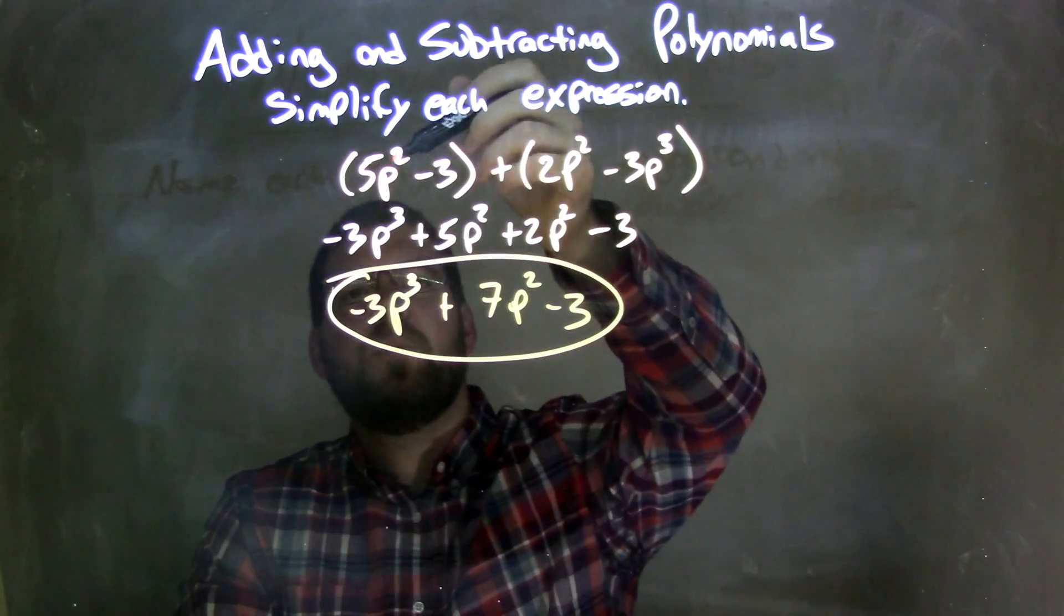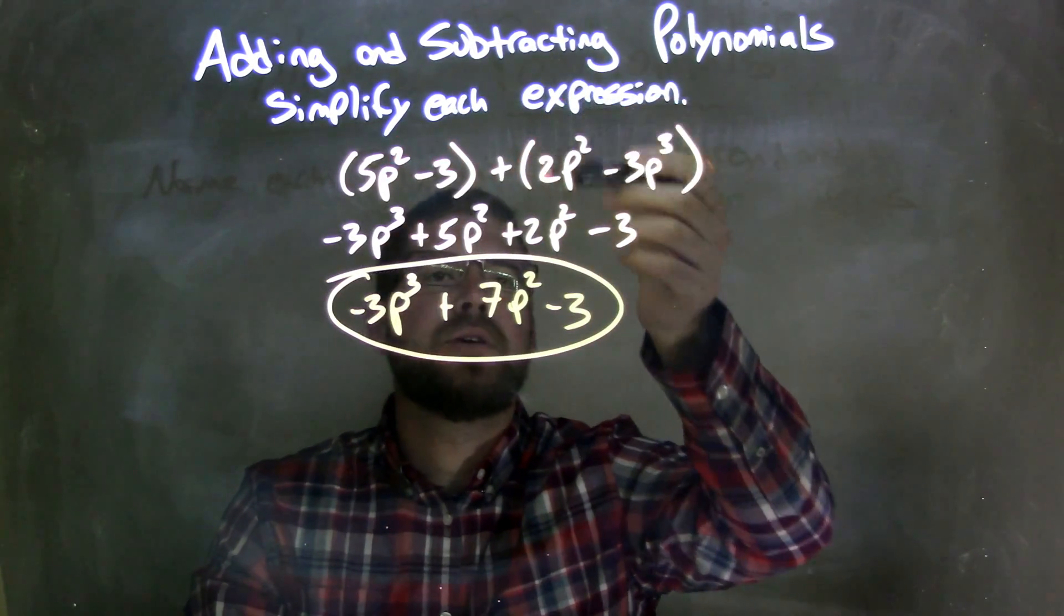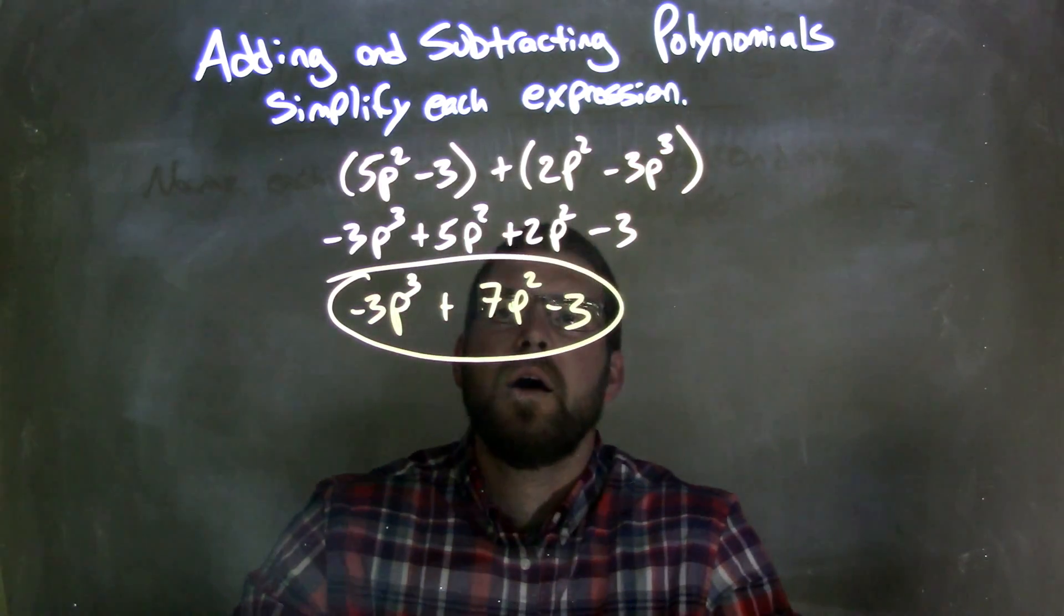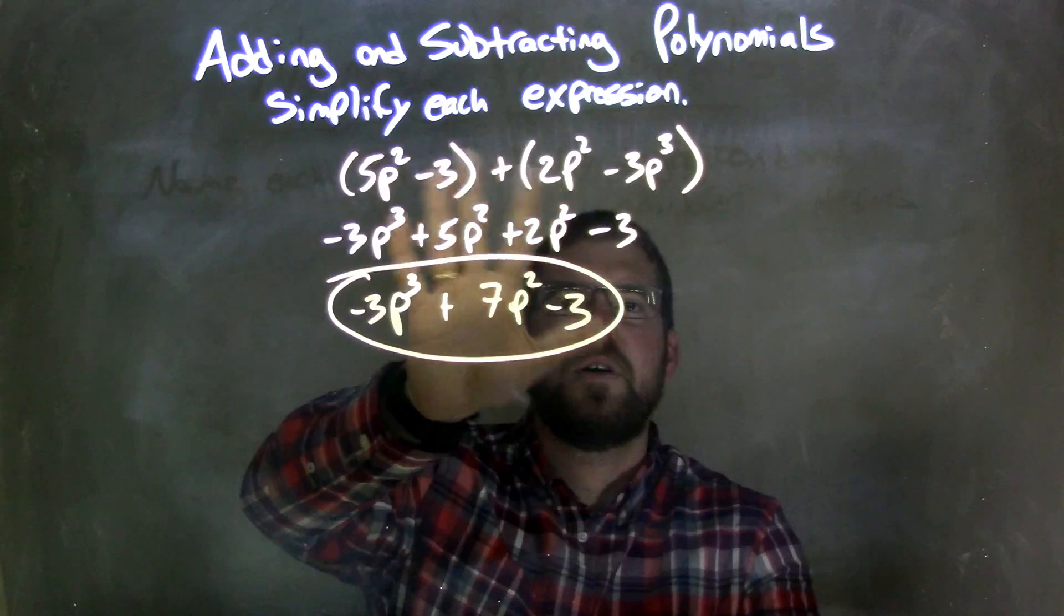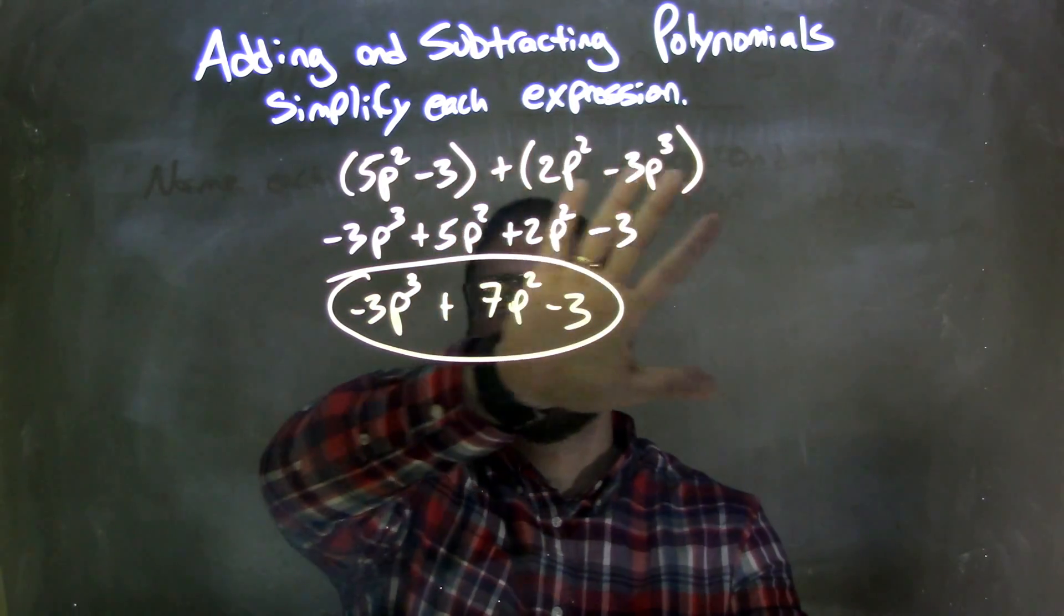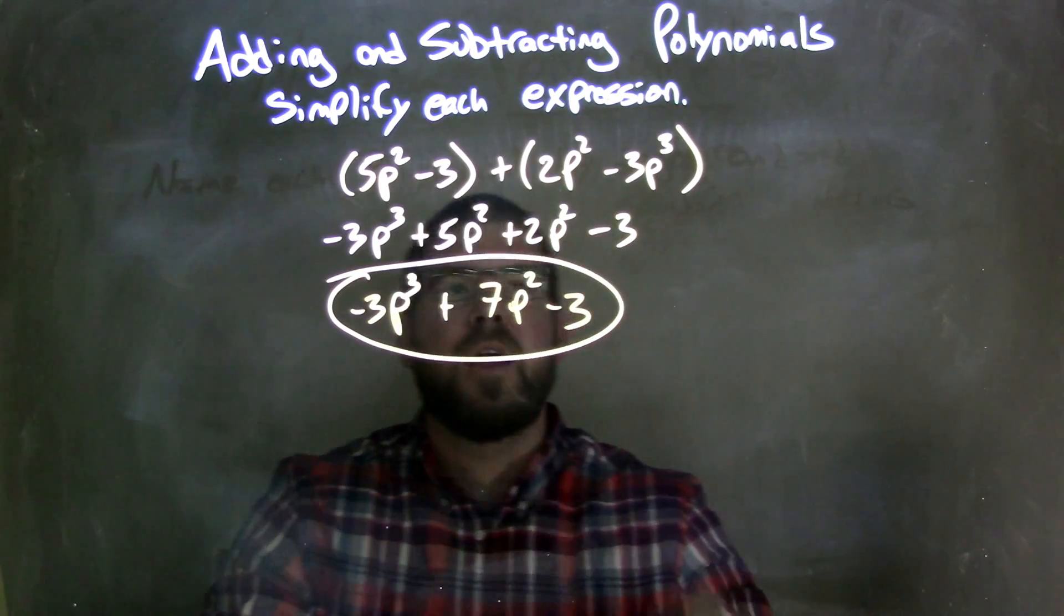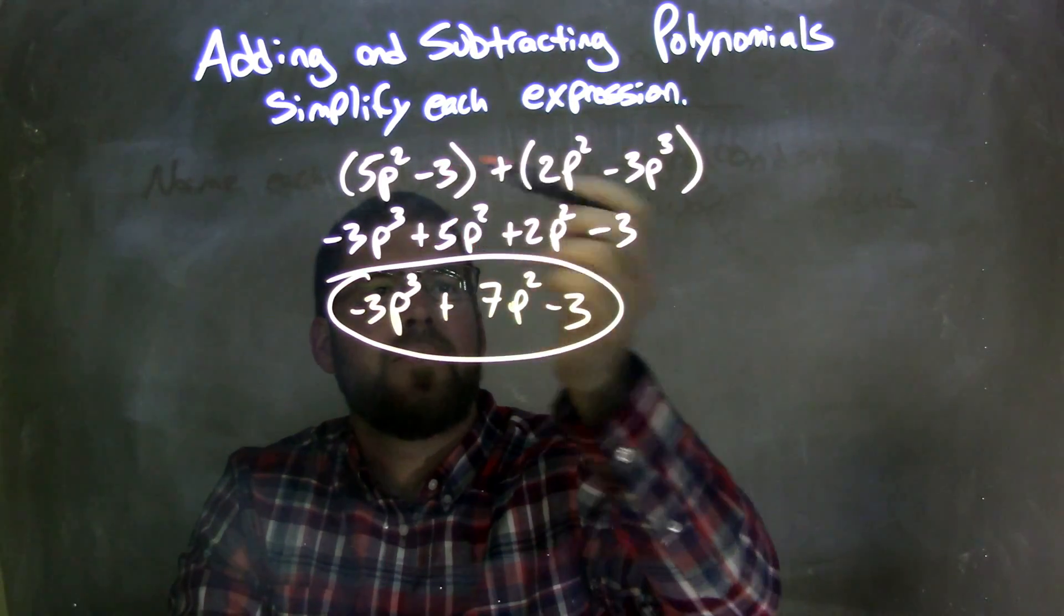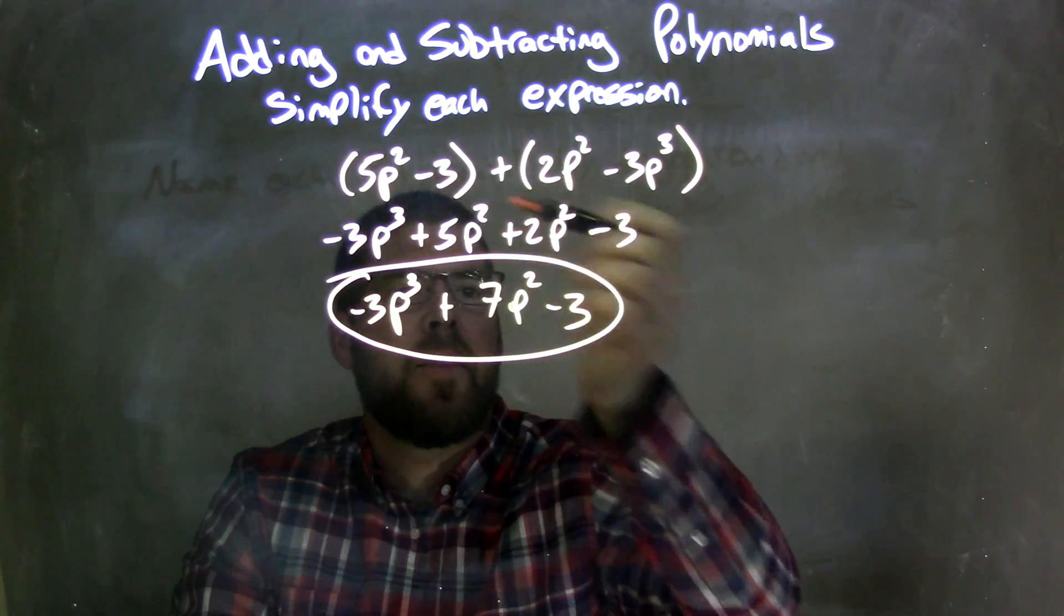So let's recap. We're given 5p squared minus 3 in parentheses, plus 2p squared minus 3p to the third, all that in parentheses. Since there's nothing I can do with these parentheses out of this simplification, I eliminated them, and then I can rearrange them, giving my negative 3p to the third first, and then I had a 5p squared, and then a 2p squared here, and then my minus 3.